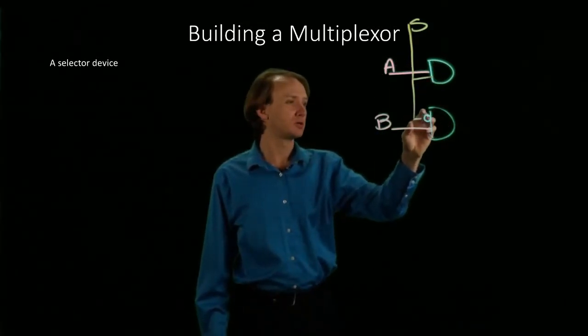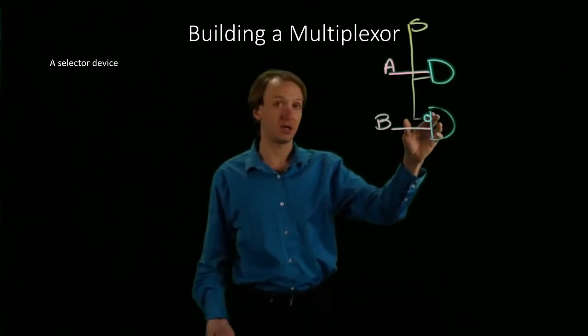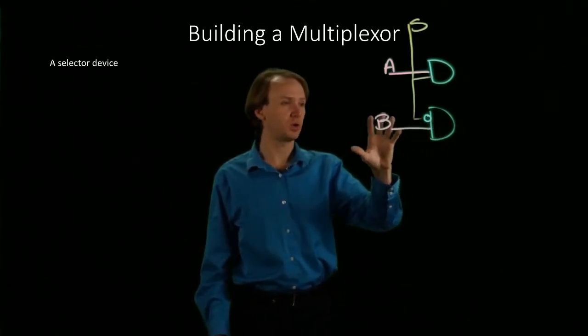but this will be 0. So this AND gate would always produce 0, regardless of what B is.